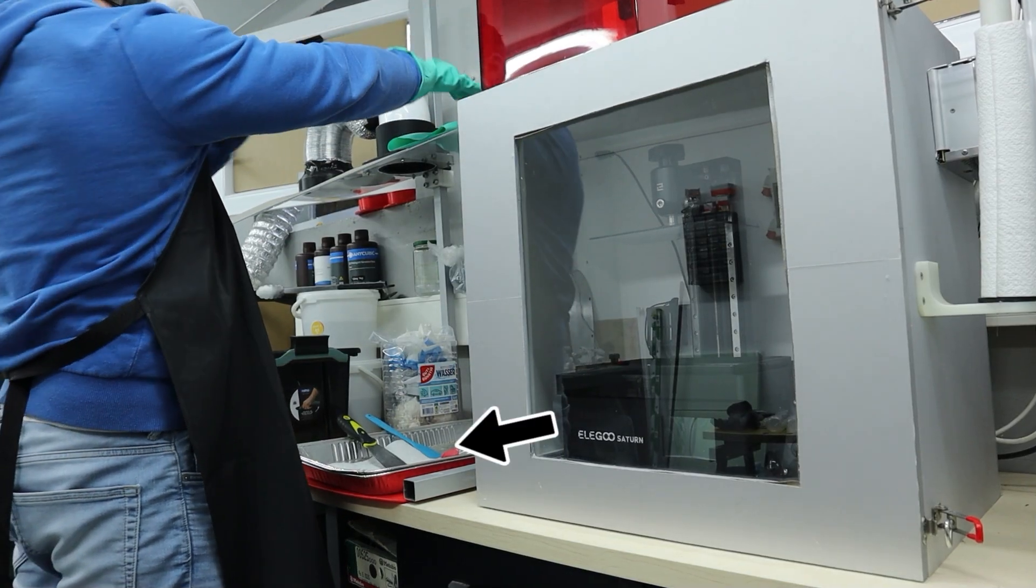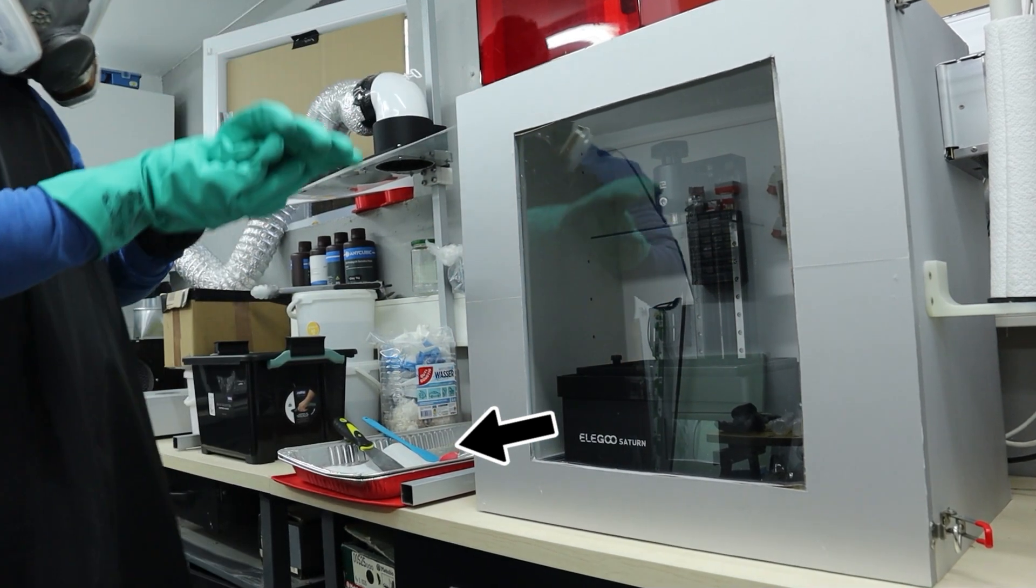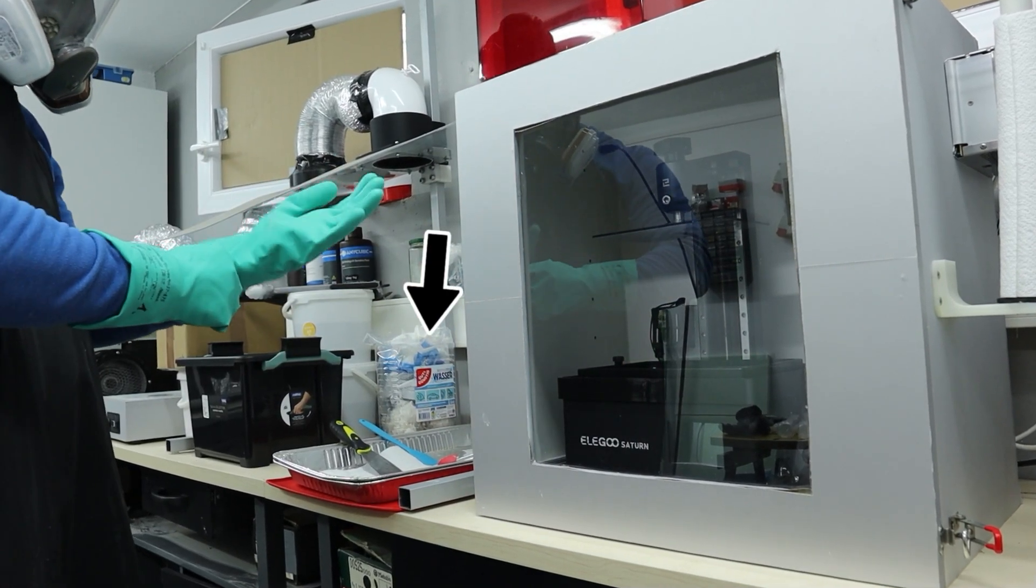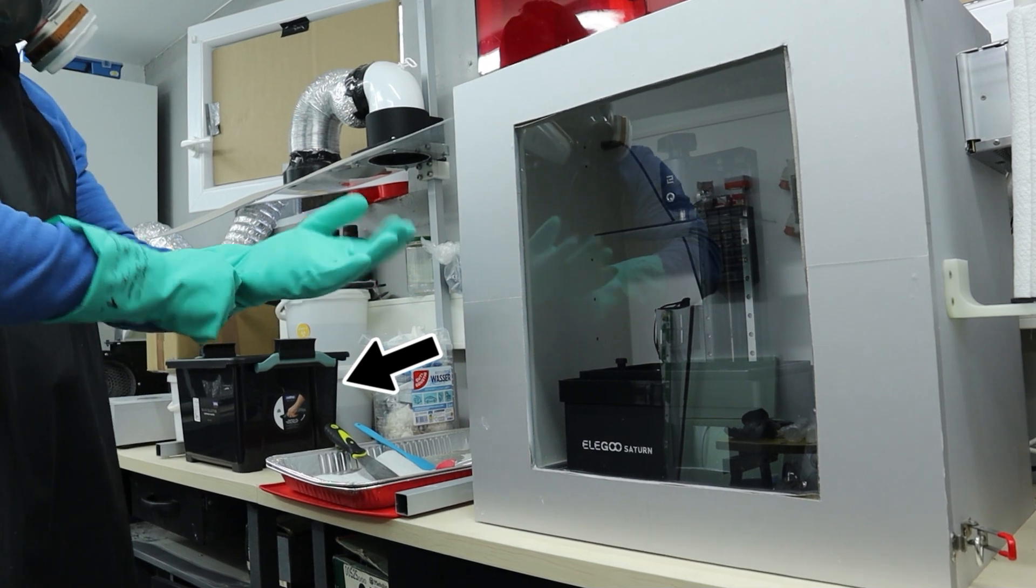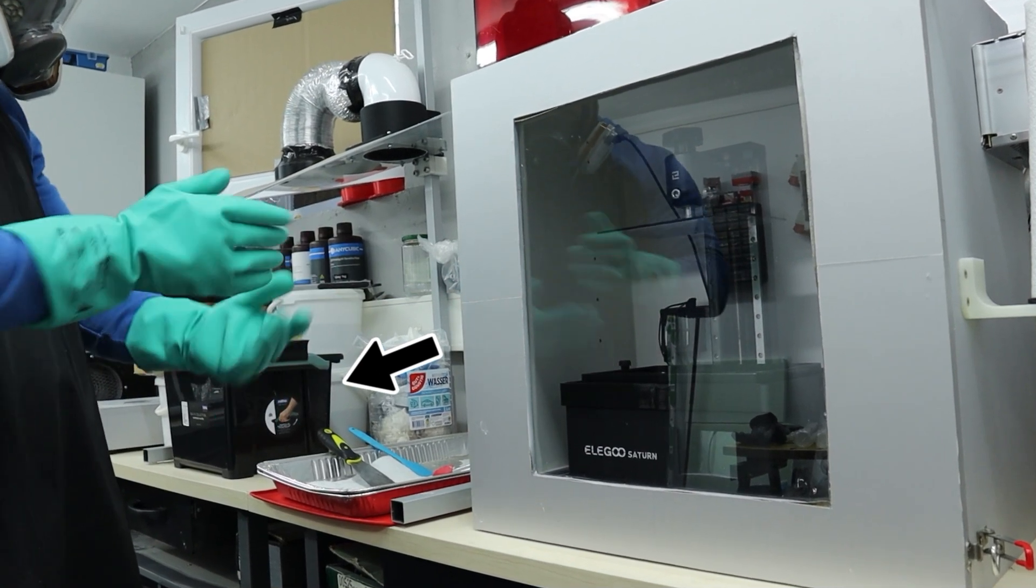Then I have an aluminum foil pan where the printed part will go, a small trash can for used paper towels, and a black box where I store the parts after printing for a few days before washing and curing.